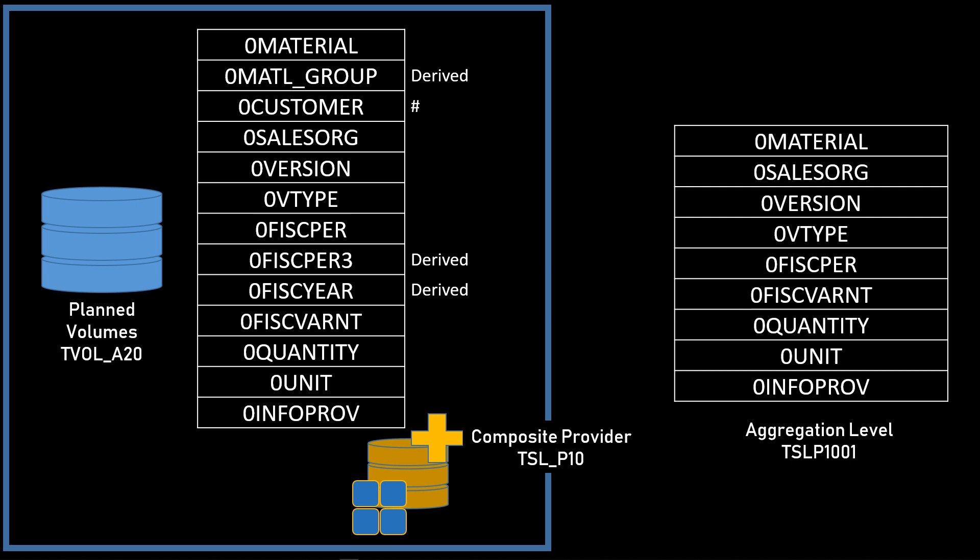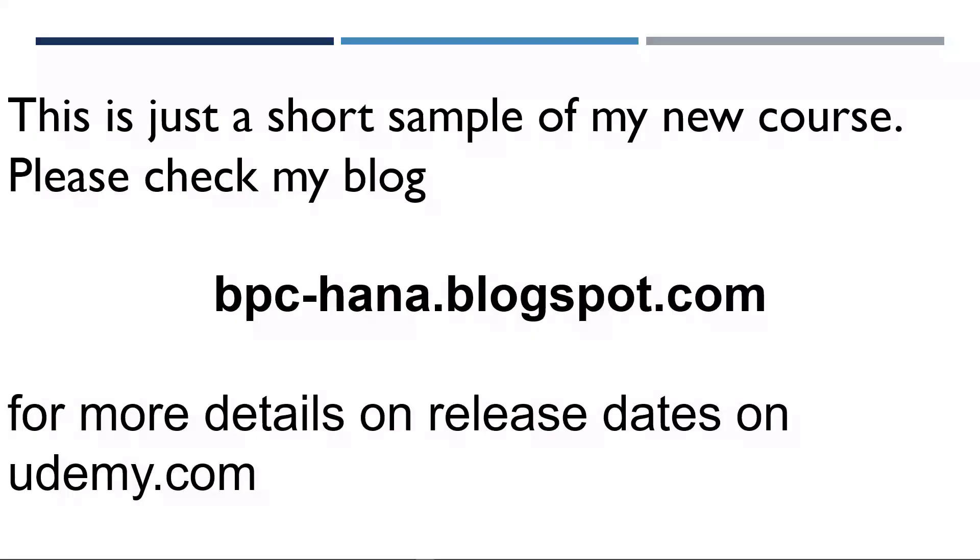The characteristics of the aggregation level should only be those characteristics of the underlying ADSO. Since the objective is to write data to an ADSO, we should not include any characteristics from an ADSO that we are not writing to. If we include wrong characteristics by mistake, the system will save the data to an ADSO.